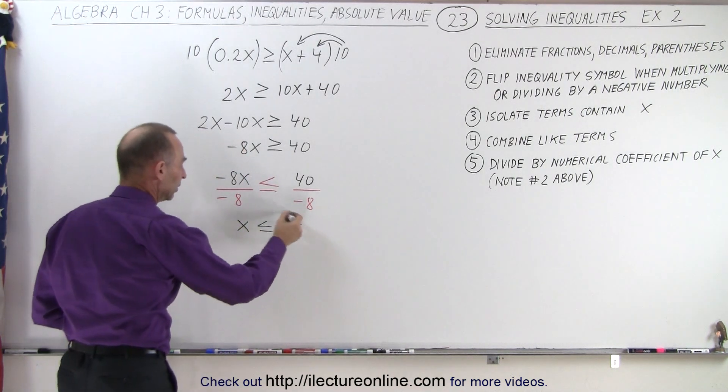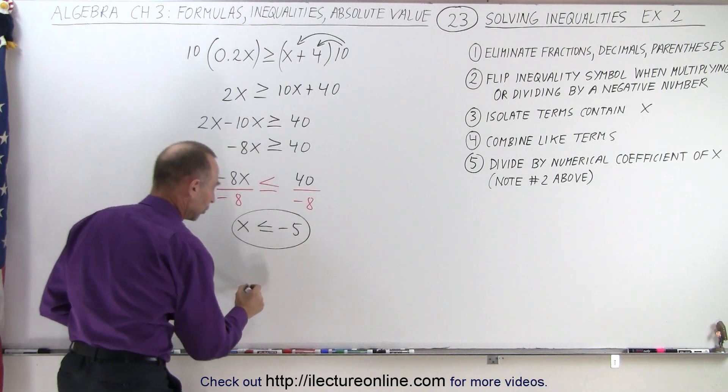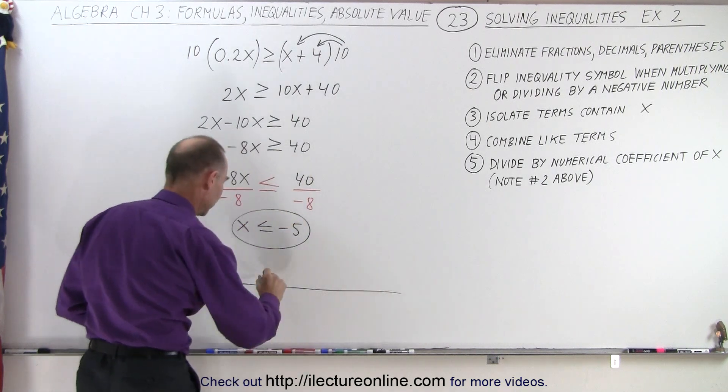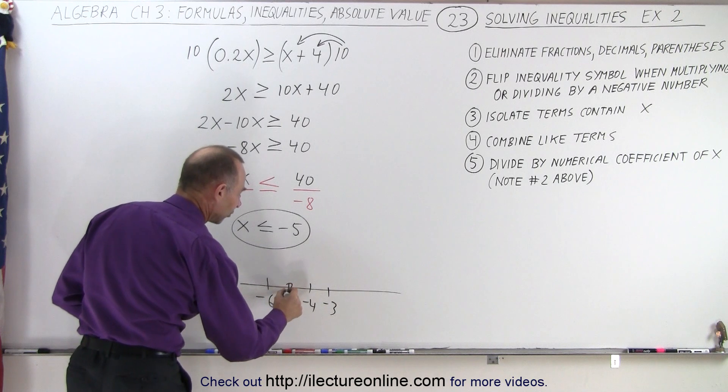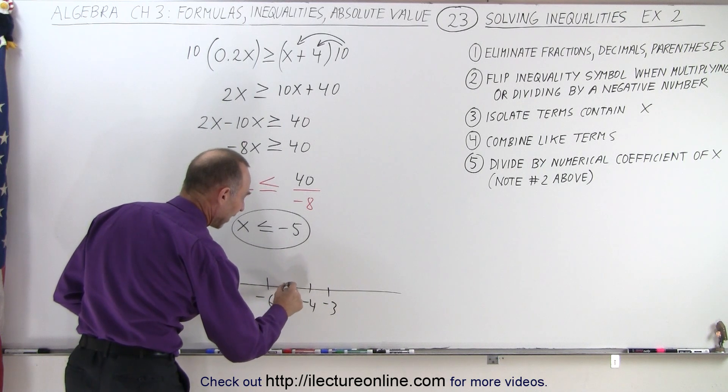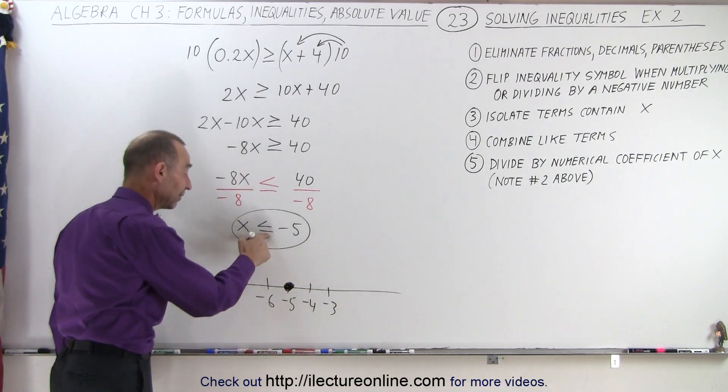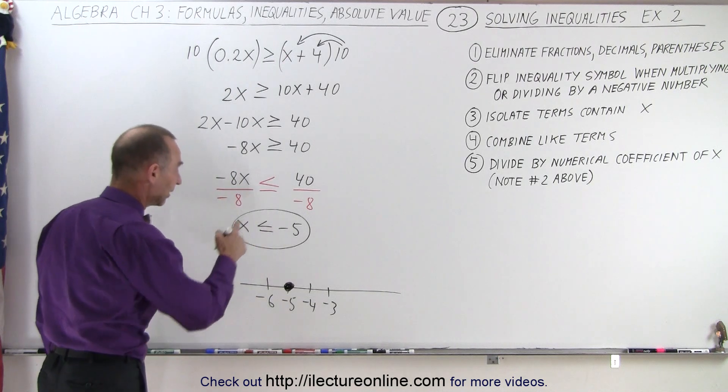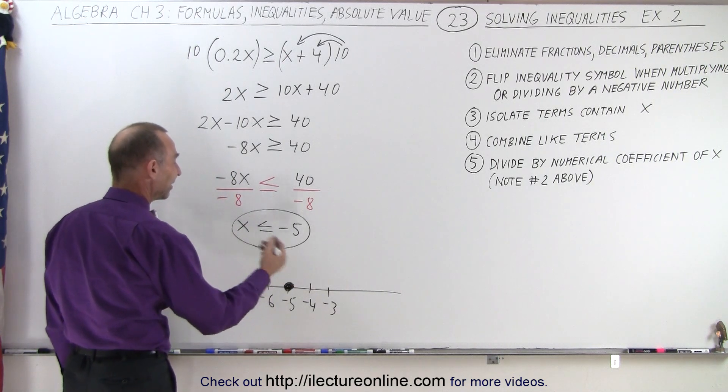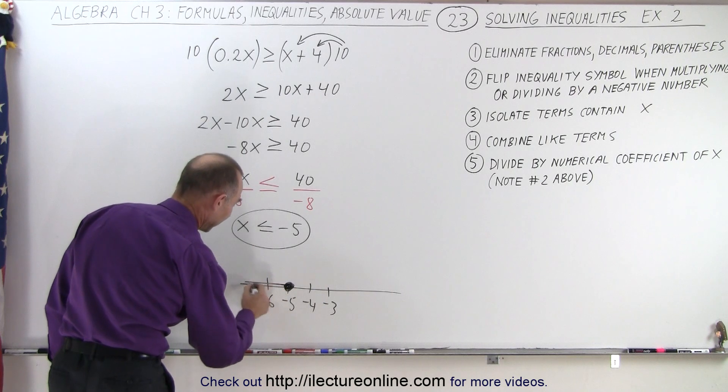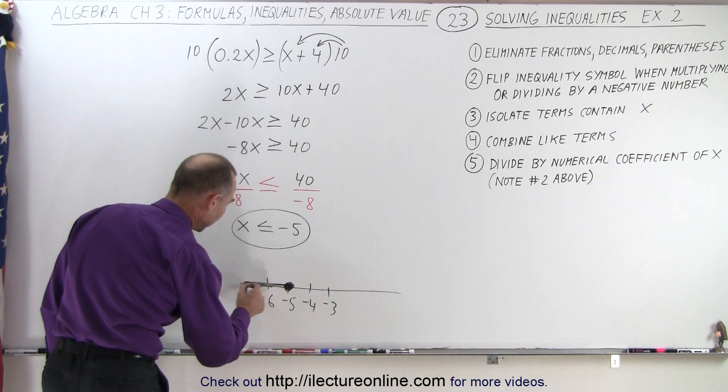And so now this is the solution, and I can also show you graphically what that looks like. We're going to have a solid circle on negative 5 because it includes negative 5, because we have an equal sign there as well as a less than sign. And it's less than negative 5, so everything is to the left of that point, including the point.